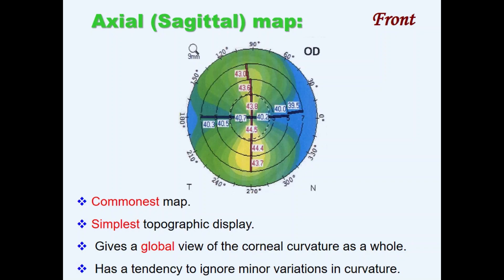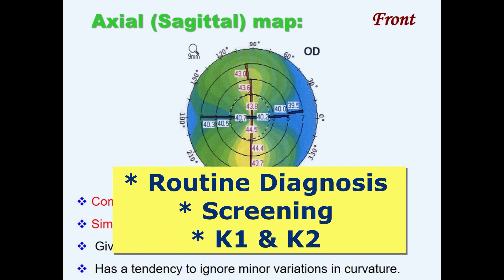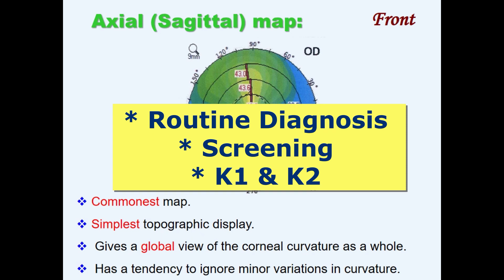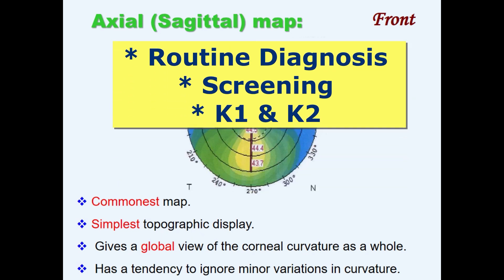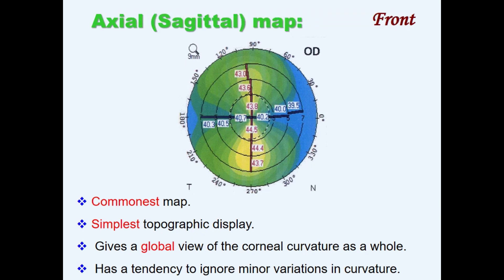Axial or sagittal map is the most commonly used one. It provides a good estimate of the overall corneal shape, which appears smooth with little noise because it provides an average of adjacent curvature values. Axial maps are the preferred clinical topographic default for routine diagnosis, screening for pathologists, IOL power calculation, and central corneal power measurement.